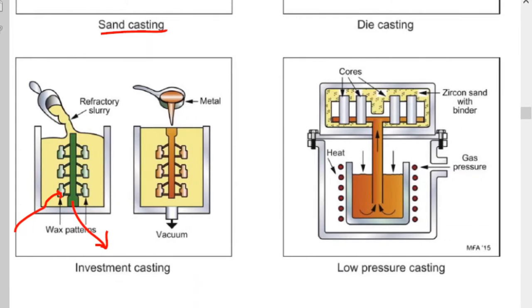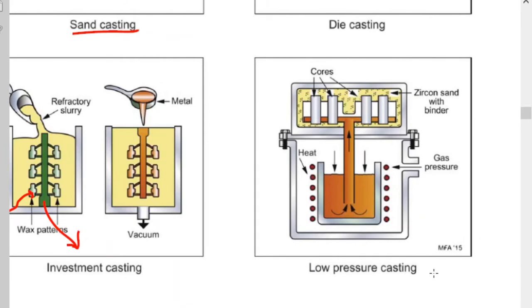In low pressure casting, the main purpose is to have a controlled atmosphere during the cooling of the liquid metal. Using pressure and temperature, the molten liquid fills the cavity from bottom to top — unlike earlier procedures where, due to gravity, filling proceeds from top to bottom. Here we fill from bottom to top.